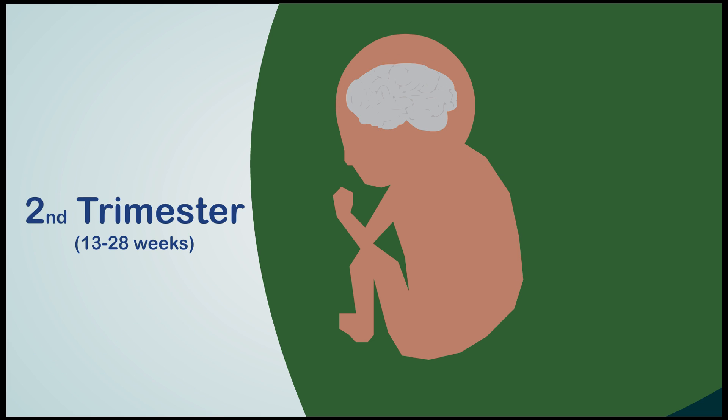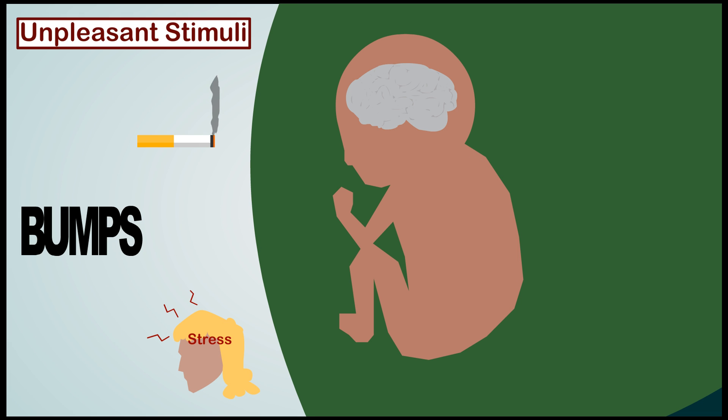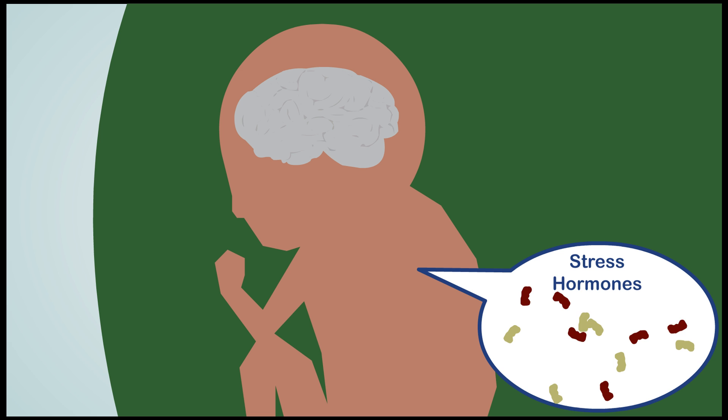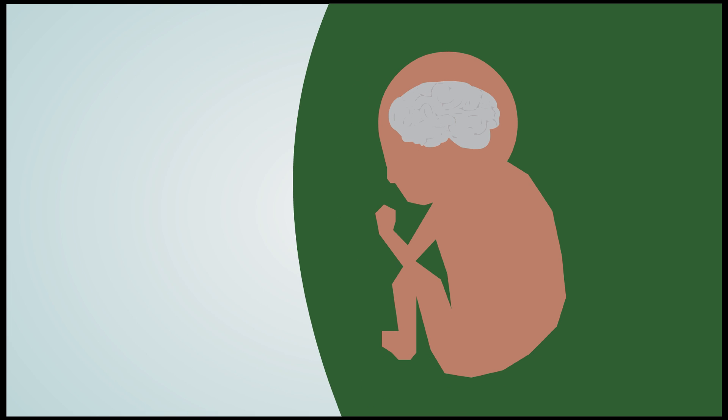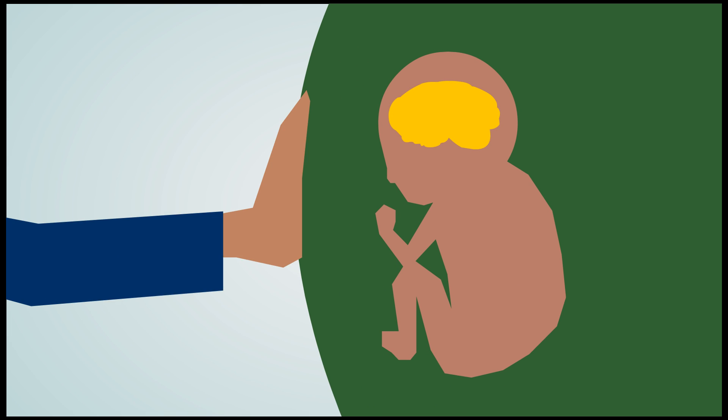During the second trimester, unpleasant stimuli have been known to cause increases in stress hormones and changes in blood flow to protect vital organs in the unborn child. These children also possess an ability to respond to touch and sound and even engage in rudimentary learning.